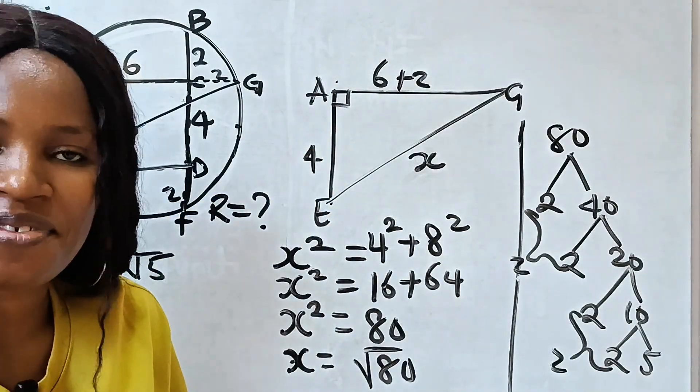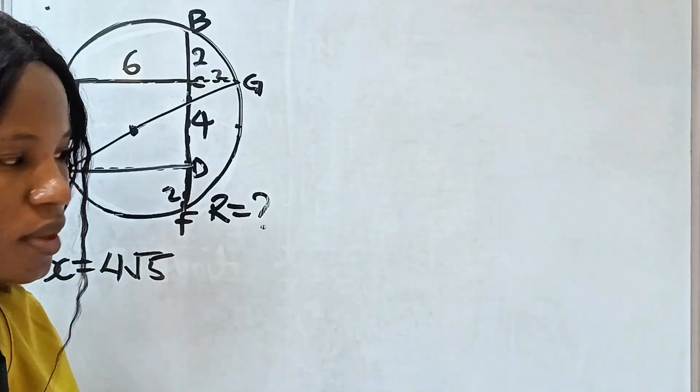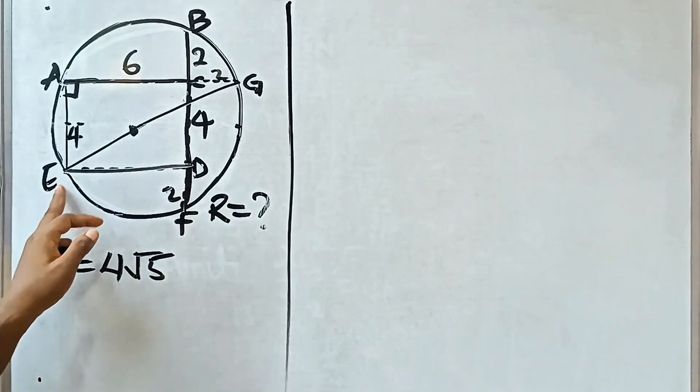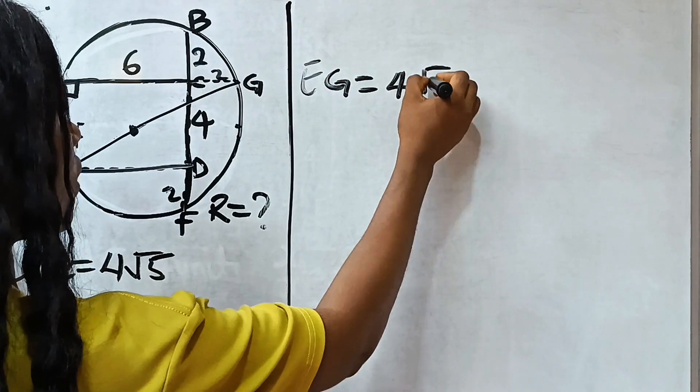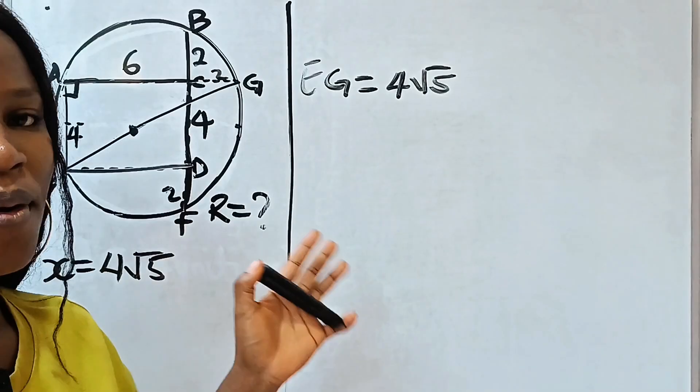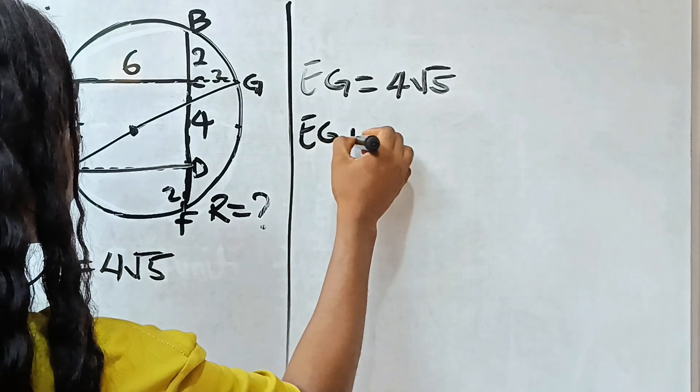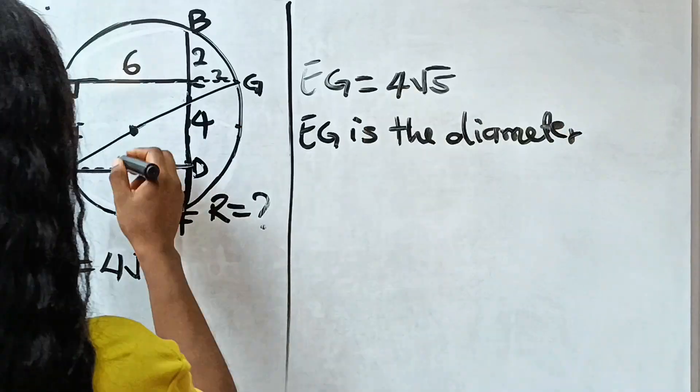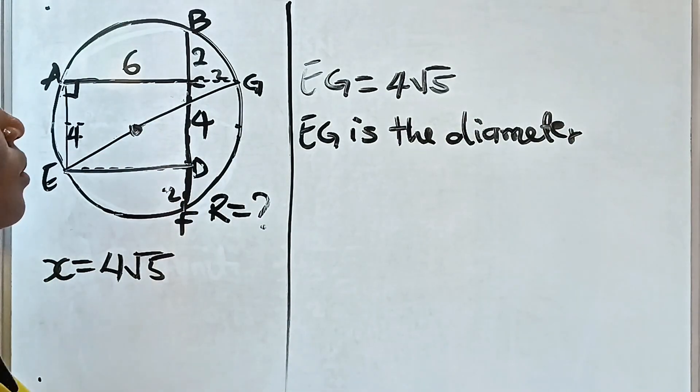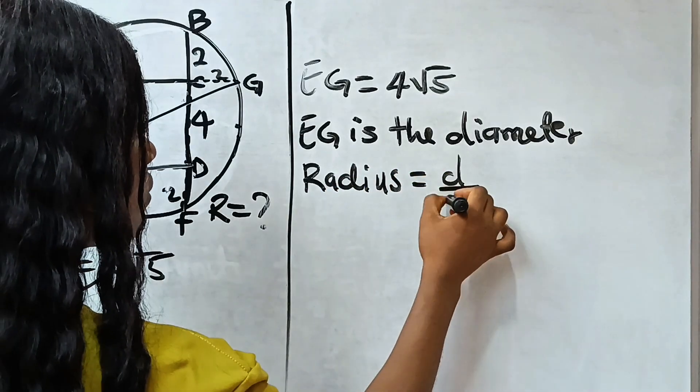Now why do we need to find our X? Remember that X is same as EG, so it means that EG is equal to 4 root 5. We are asked to find the radius of this circle. Remember that EG is the diameter because it's a straight line that passes through the center of the circle. And the radius is equal to diameter divided by 2.